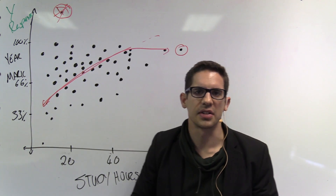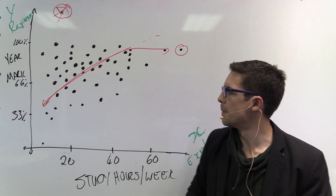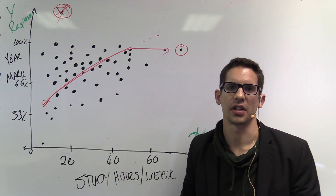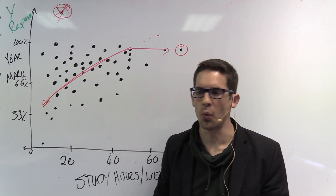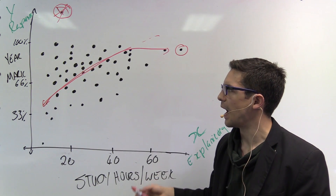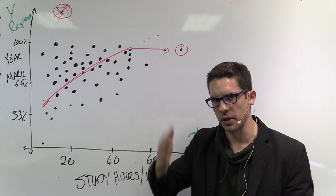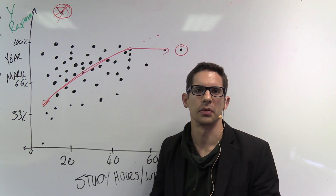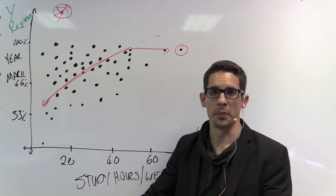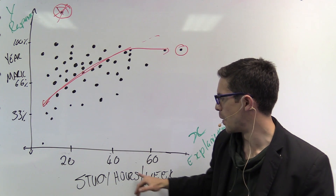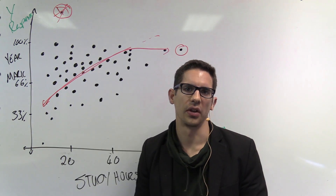The next question asks: is this an experiment or an observational study? In this case, this is an observational study. They basically asked all the students what their study hours per week were and what their final mark was. For an experiment, we would need to split the group into a control group and a treatment group. This is definitely an observational study — all we did was observe afterwards what students' study hours per week were and what their final year mark was.